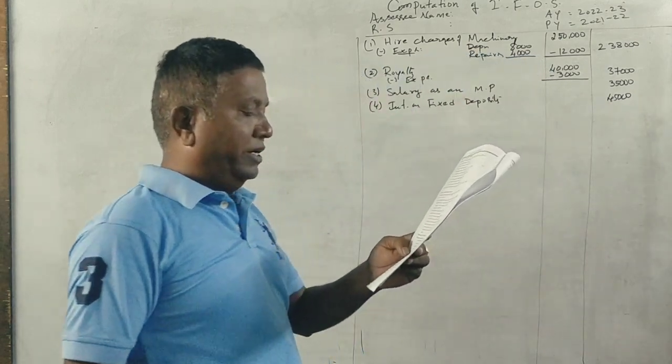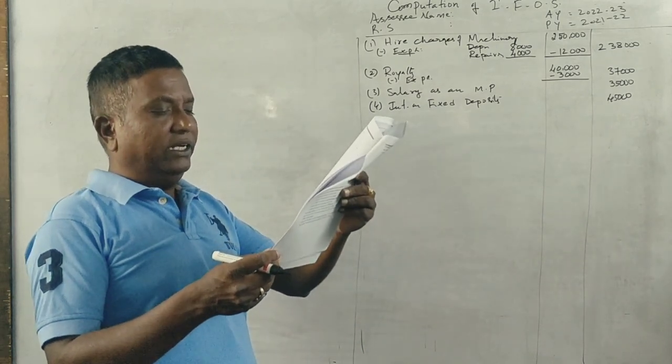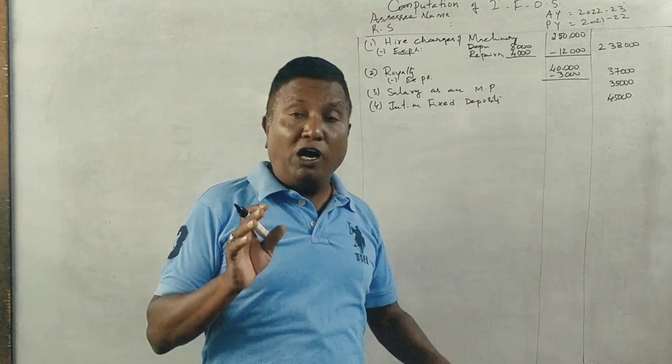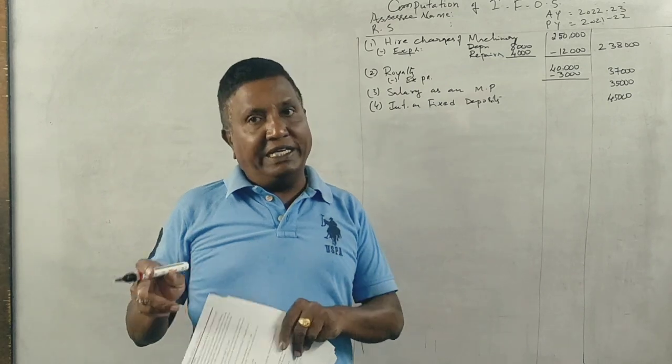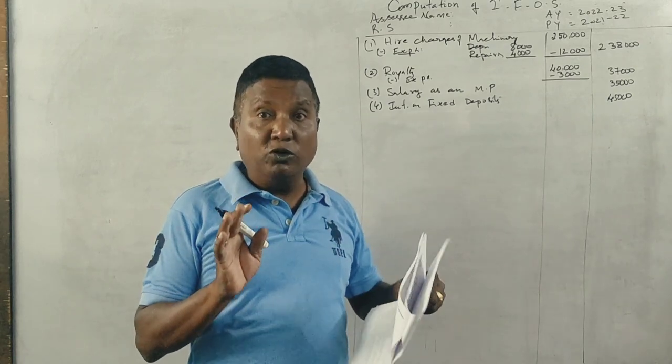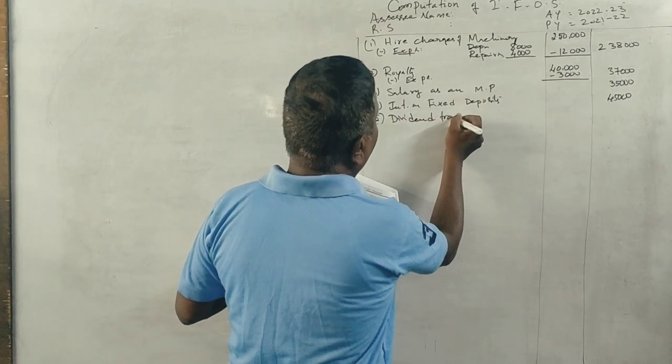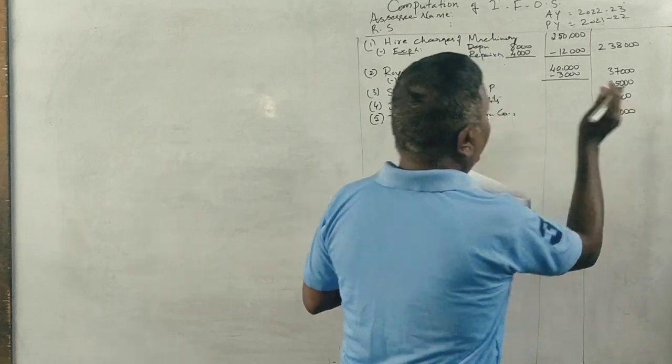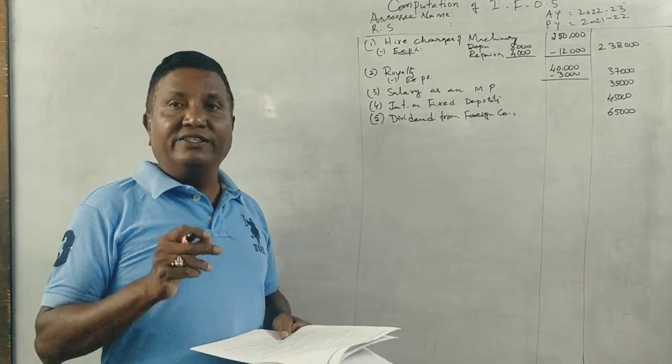Next point: He earned dividend from foreign company Rs. 65,000, of which Rs. 15,000 was deducted as TDS, and the balance was received in India. We need the gross amount - how much dividend he earned from the foreign company is Rs. 65,000. From that, if you deduct Rs. 15,000 of taxes, he will get only Rs. 50,000. But we don't want to write fifty thousand - we have to write the gross amount. Therefore, dividend from foreign company: Rs. 65,000, excluding TDS.